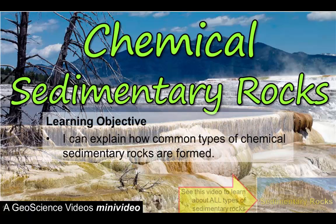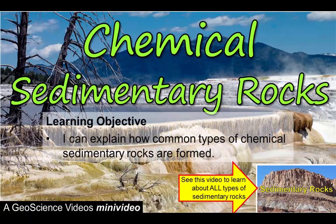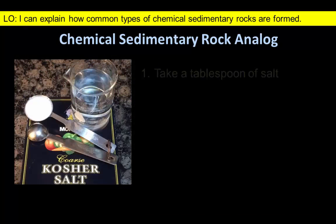Chemical sedimentary rocks are one of the three major types of sedimentary rocks. This mini video explains how they're formed.